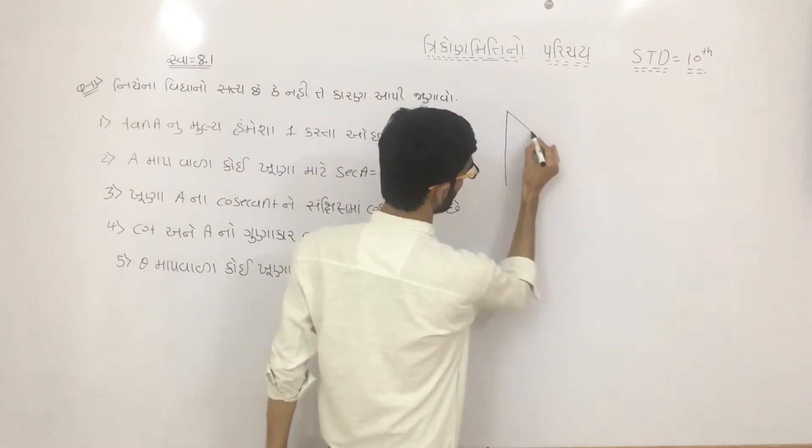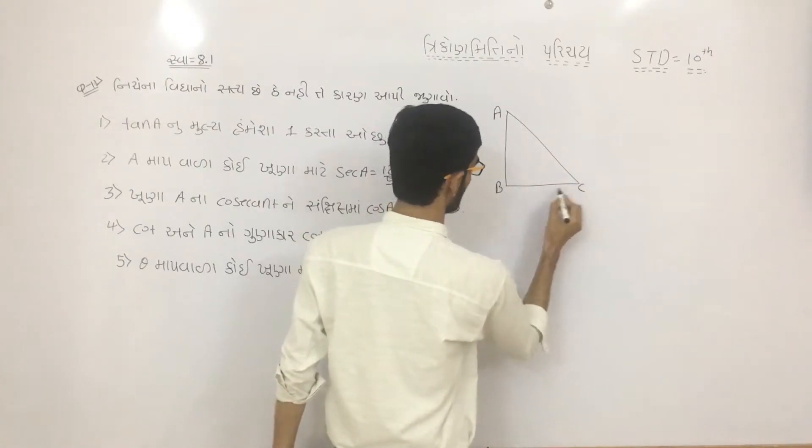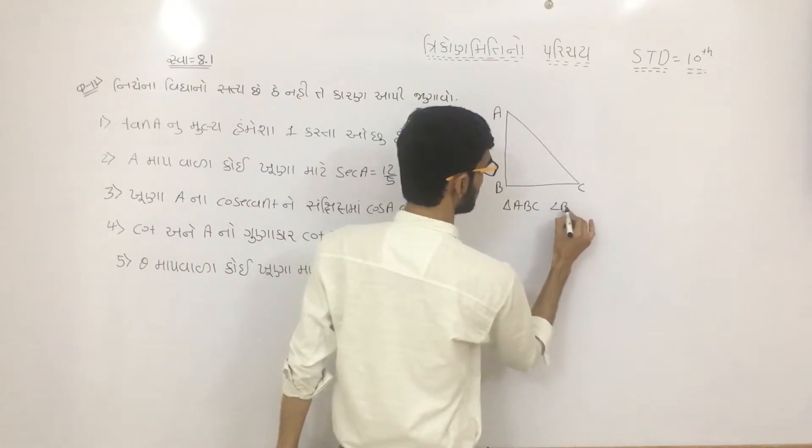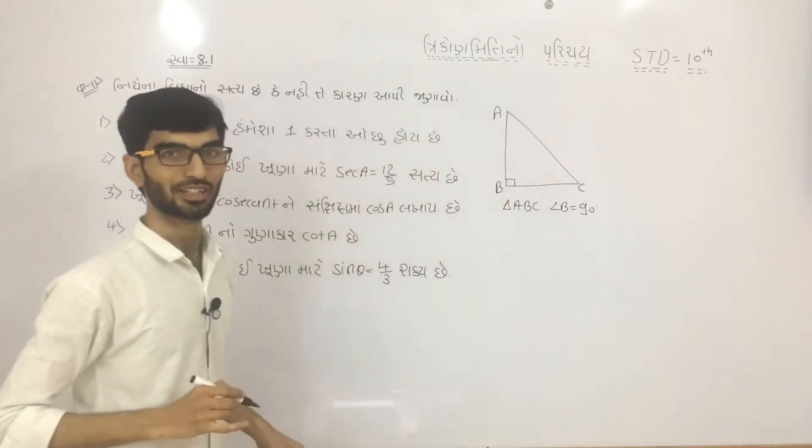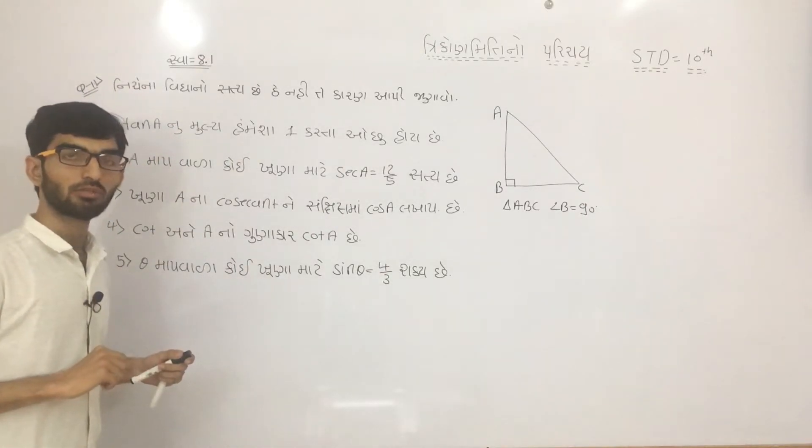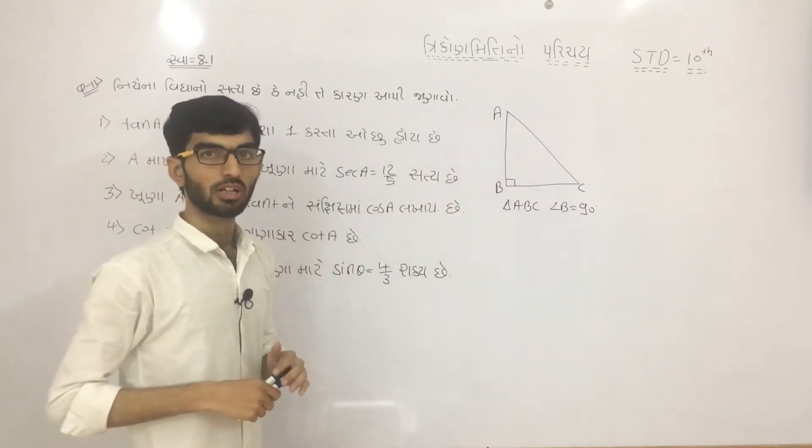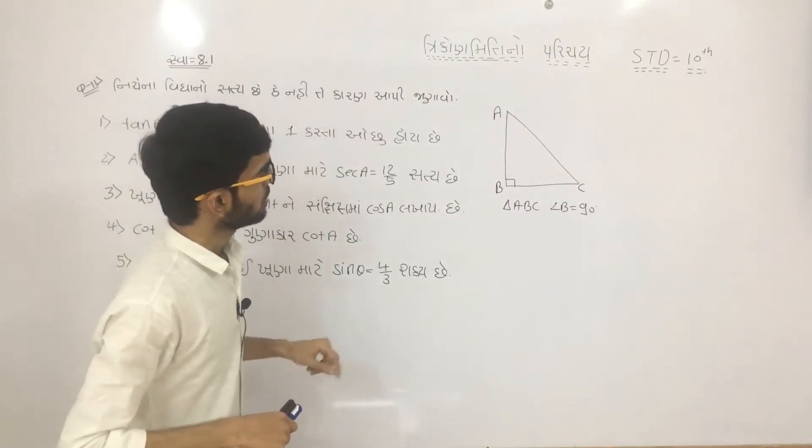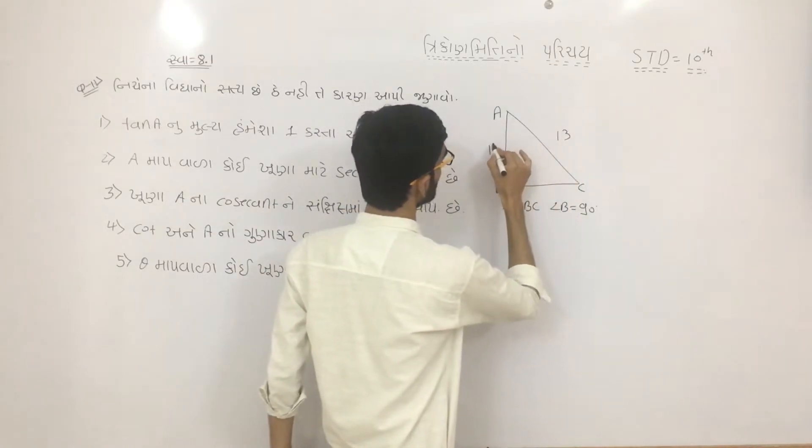We have taken this triangle. We have all the information about it. We have some name of the triangle. We have taken this triangle A, B, C. So it's 10N. Now, if we make a triangle, we will have taken this triangle.